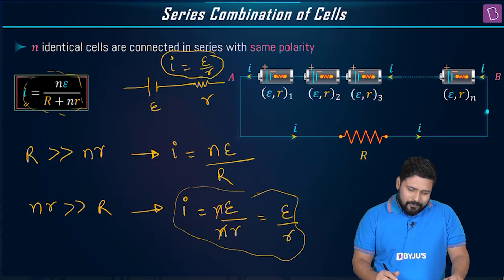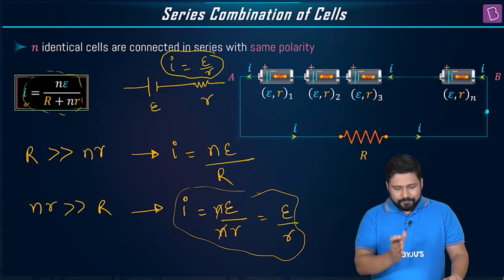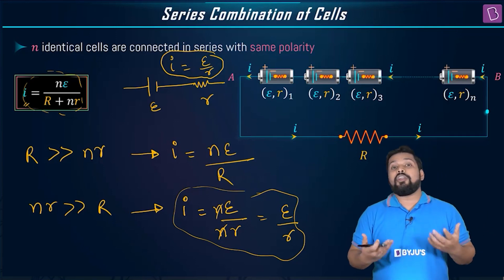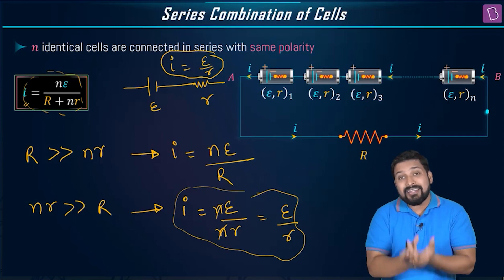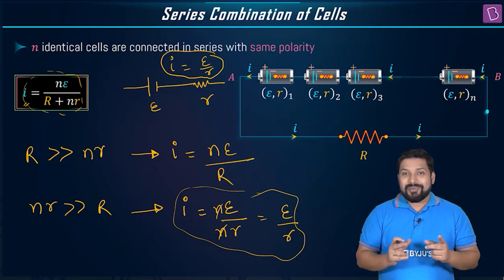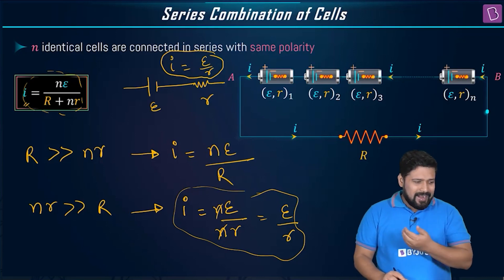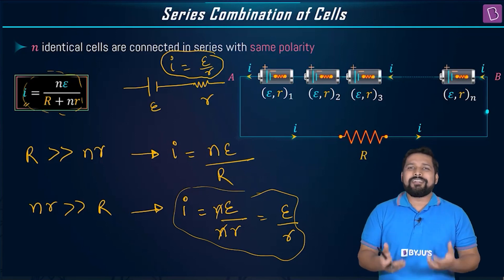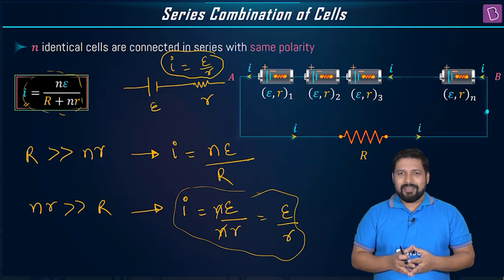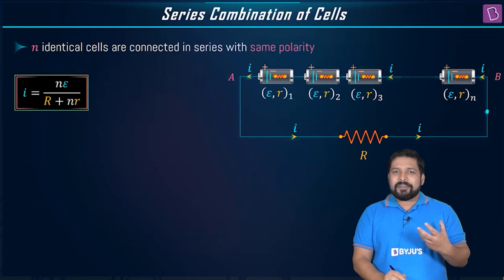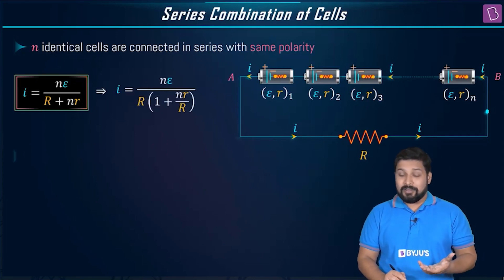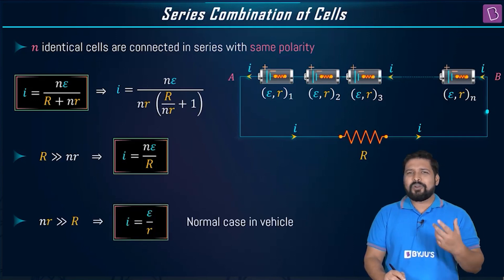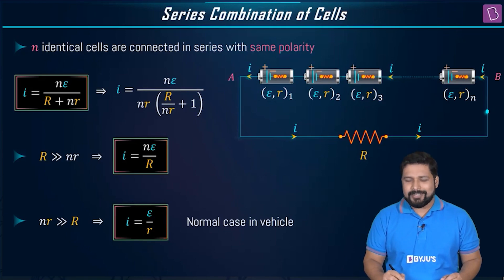So what we see is that by adding cells in series, we gain voltage — we can increase and enhance the voltage. However, when it comes to current, connecting cells in series also increases the total internal resistance, so the current does not increase. It remains similar to what a single cell would provide.